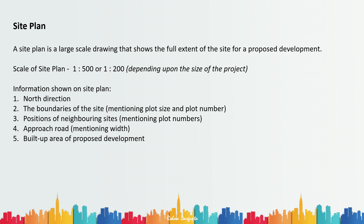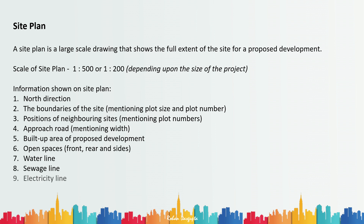Number five is the built-up area of the proposed development, and this has to be hatched. Number six is the open spaces around the development — that is the front, rear, and side open spaces. Number seven is the water line. Number eight is the sewage line. Number nine is the electricity line. And lastly, number ten is one prominent landmark. These are the things that must be shown; apart from this, if there are special requirements for the project you must show those things too.